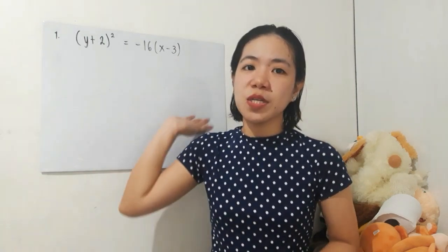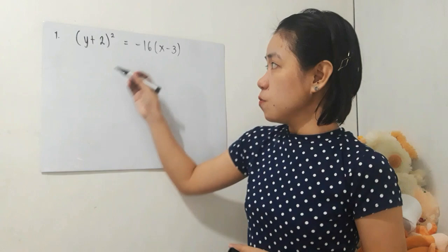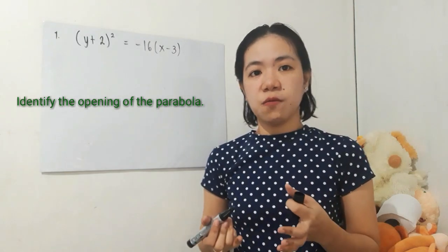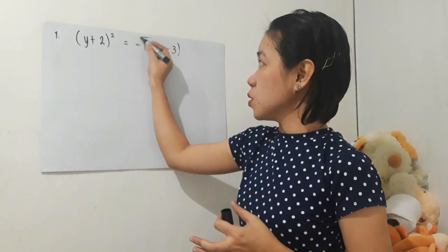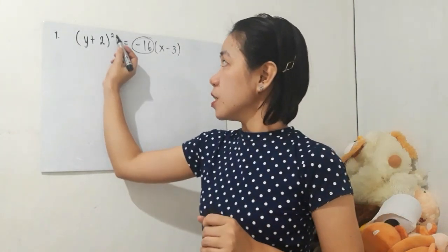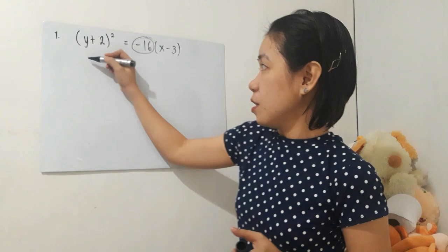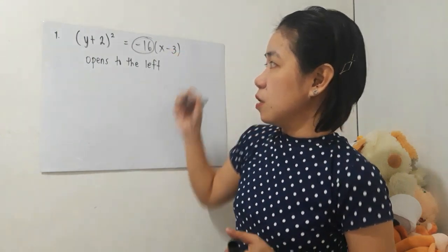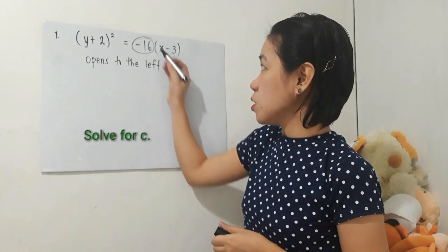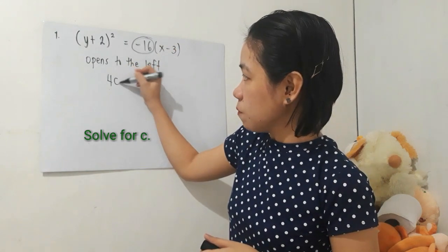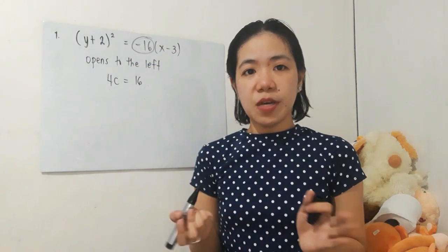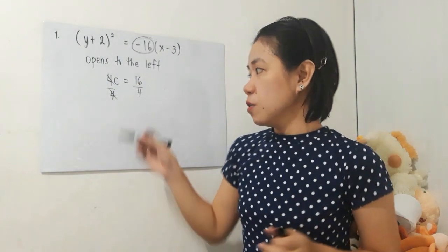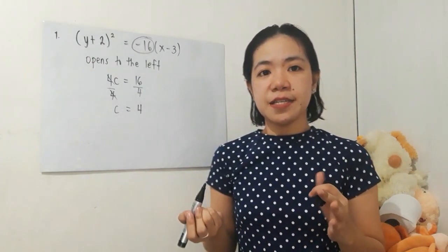It's still the same parabola, but now written in standard form. To find the focus, we have to identify first the opening of the parabola. Since we have negative 16, or negative 4c, and this is y squared, meaning it opens to the left. So the parabola opens to the left. Now we may solve for the value of c. Since 4c equals 16, we divide both sides by 4, giving us c equals 16 divided by 4, that is 4.